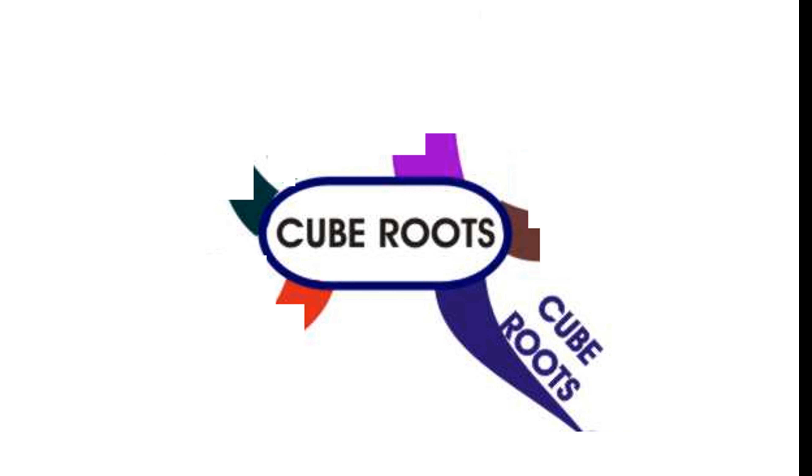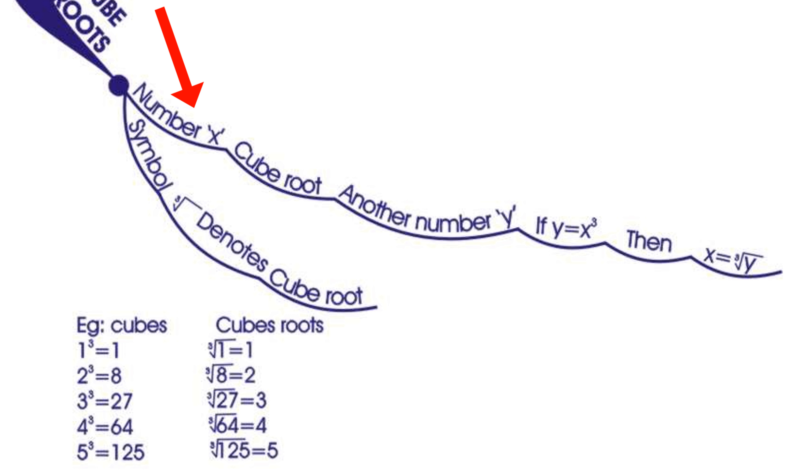Let us see our third branch. It is about cube roots. A number x is a cube root of another number y. If y equals x cube, then x equals cube root y. The symbol cube root denotes cube root.